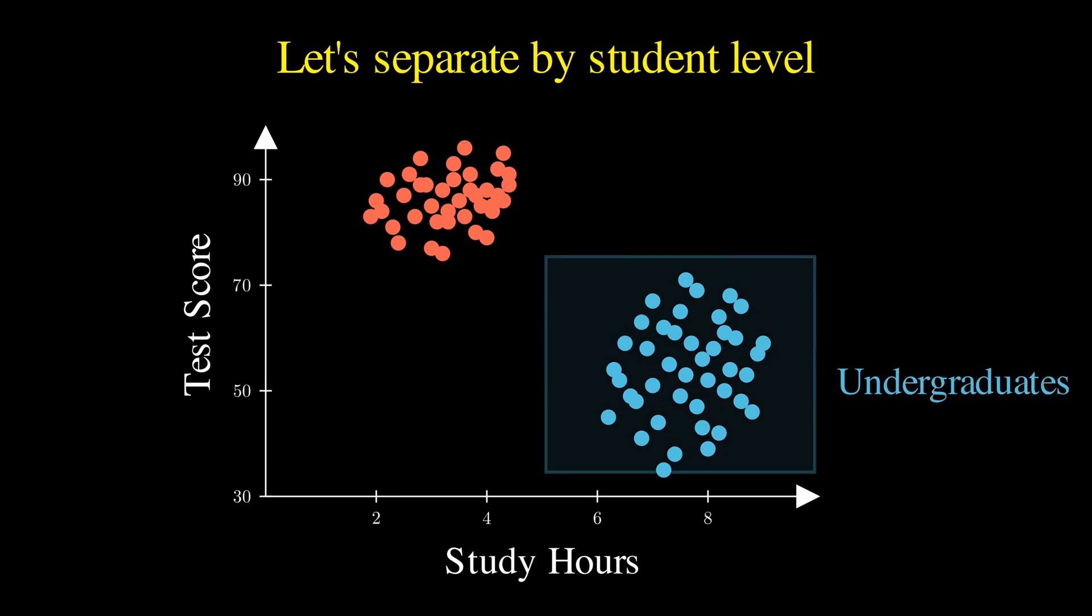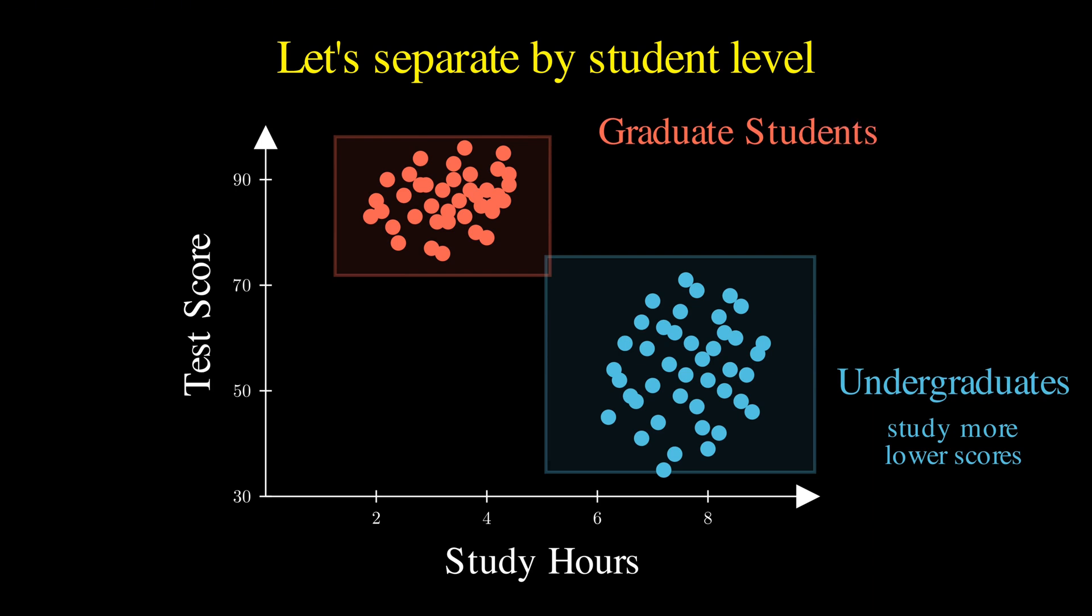On the bottom right, we have the undergraduate students, which may study more for this test and score lower because it's a very difficult test, while the graduate students cluster on the upper left corner, and because they may already have knowledge in this domain, they study less and usually score higher.